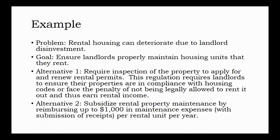Consider the problem of rental housing deterioration due to landlord disinvestment, with a goal of ensuring landlords properly maintain their rental units. Alternative one is a regulation: require inspection of the property at the time of application and renewal of rental permits, with no permit issued until the property is compliant with housing code. Alternative two is a subsidy: government reimburses up to $1,000 in maintenance per rental unit per year. Both move us closer to the desired outcome using different methods, compared against the null — where inspections only occur after a complaint, which rarely happens because tenants fear retribution from landlords.